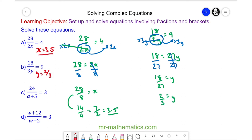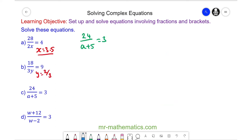Let's try question c. With question c we're going to move the a plus 5 to the other side which we do by multiplying both sides by a plus 5 because anything divided by itself will make 1. So these will cancel. So we have 24 is equal to 3 lots of a plus 5.